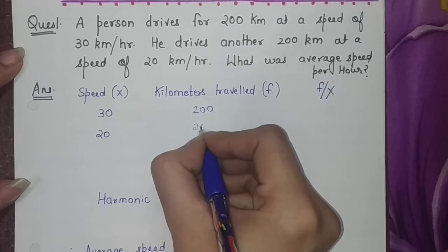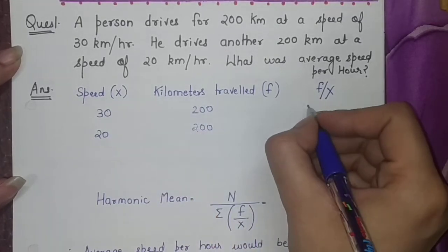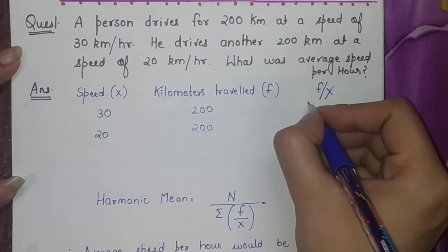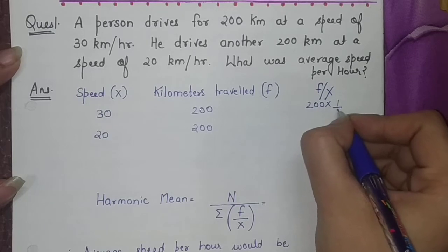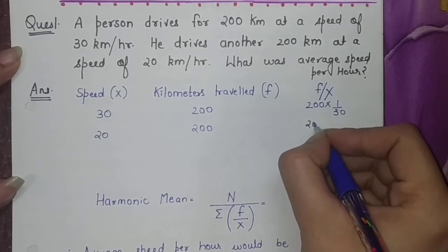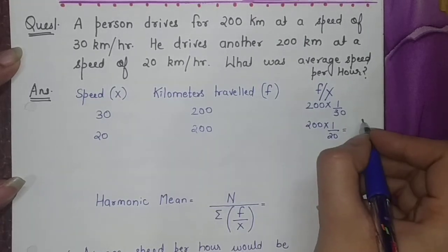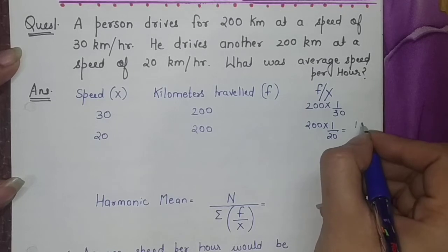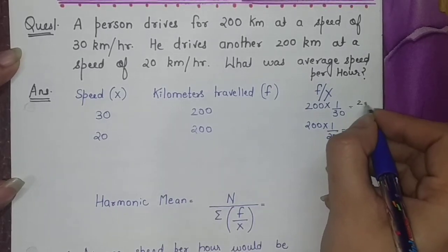According to this, what is your f by x, the reciprocal? For harmonic mean it is 200 into 1 by 30 and 200 into 1 by 20, that is equal to 20 by 3 and 10.